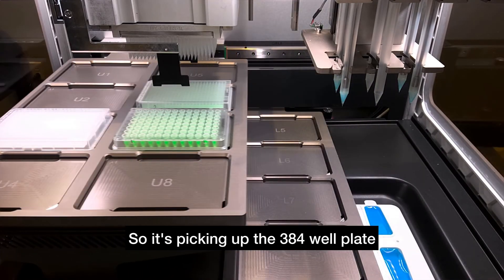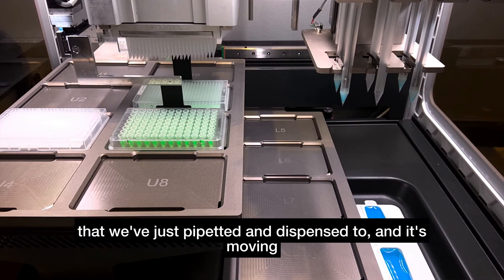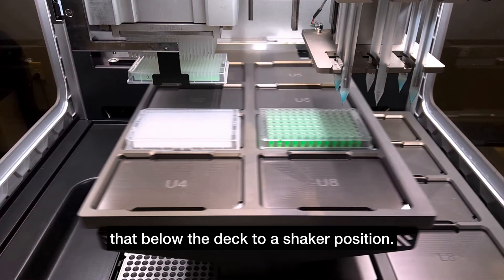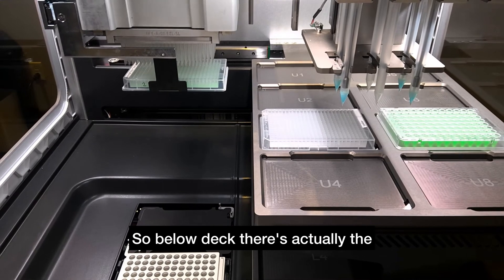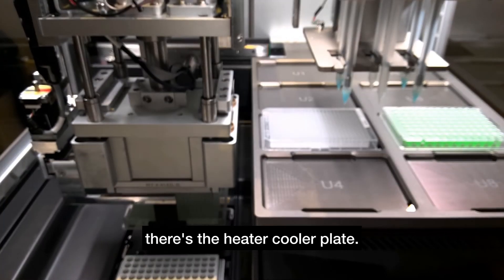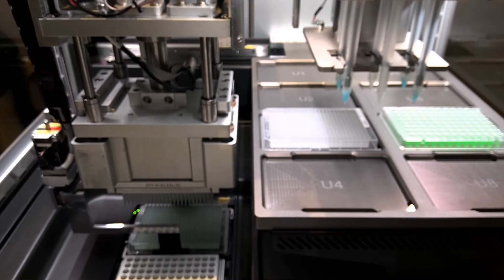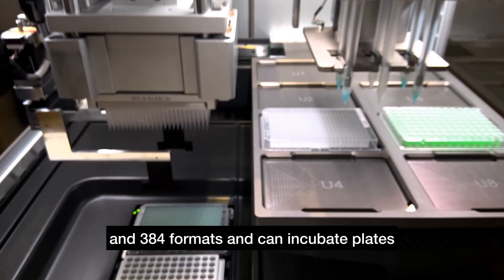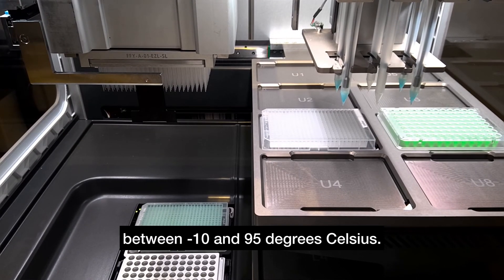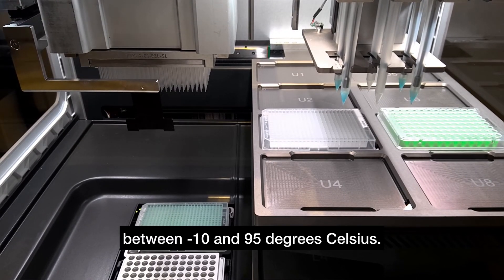It's picking up the 384 well plate that we've just pipetted and dispensed to, and moving that below the deck to a shaker position. Below deck there's the shaker we're moving to now, and just in front of it there's the heater cooler plate. That can work for both 96 and 384 formats and can incubate plates between minus 10 and 95 degrees Celsius.